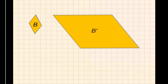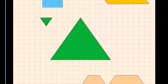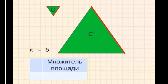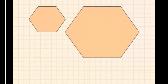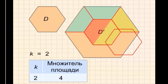Теперь взгляните на фигуры B и B'. Коэффициент подобия равняется 4, и мы можем расположить 16 фигур B в фигуре B'. Для следующих двух фигур C и C' мы видим, что коэффициент подобия равняется 5, а площадь треугольника C' в 25 раз больше площади C. Коэффициент подобия фигур D и D' равен 2. Мы можем предположить, что площадь большей фигуры в 4 раза больше, и это действительно так.